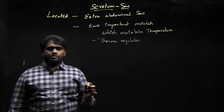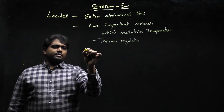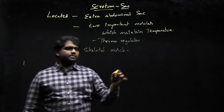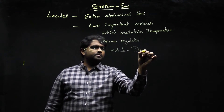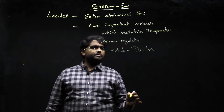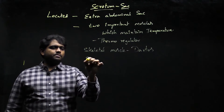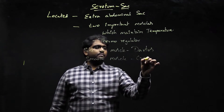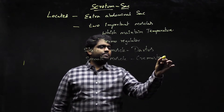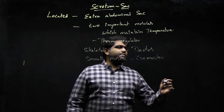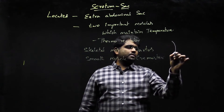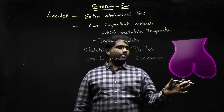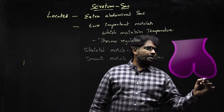The two muscles are: first, a skeletal muscle called dartos, and second, a smooth muscle called cremaster. If you see the structure, the scrotum is located on the outside.